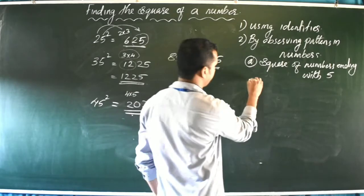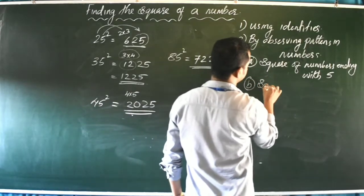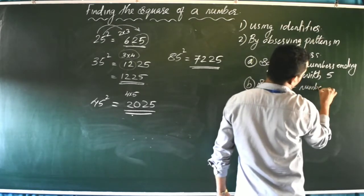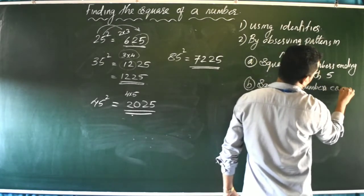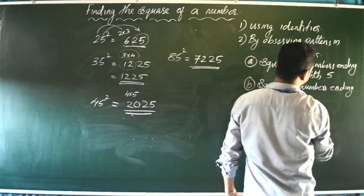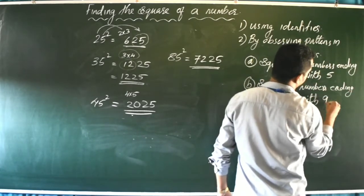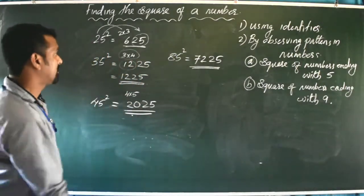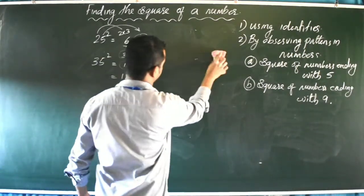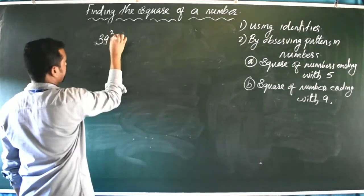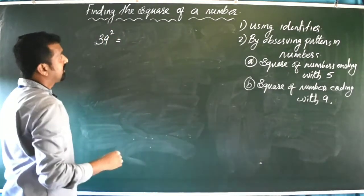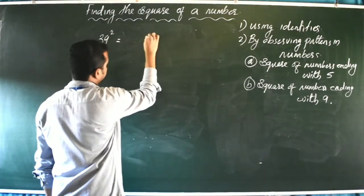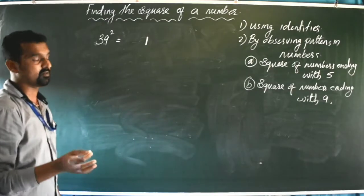Next pattern is the square of numbers ending with 9. For example, 39²: the last digit of the answer will always be 1, since 9 × 9 = 81.